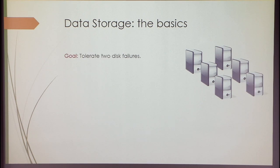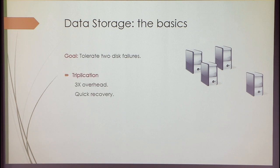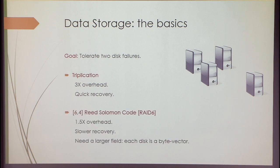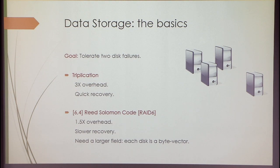In RAID5, you treat each disk as a huge bit vector, with five data disks and the sixth storing the XOR of these. This gives 1.2x overhead, much better in terms of storage. The price is slower recovery: if a machine is down, you read data from five other machines and XOR it all together, which is obviously slower. Now let's talk about two disk failures. The industry standard is still doing triplication — replicate everything thrice. It has the same quick-recovery advantage, but the overhead is 3x. RAID6 uses a 6,4 Reed-Solomon code: four data disks plus two parity disks. The cost is slower recovery; with two failures, you solve a small 2×2 system of linear equations.